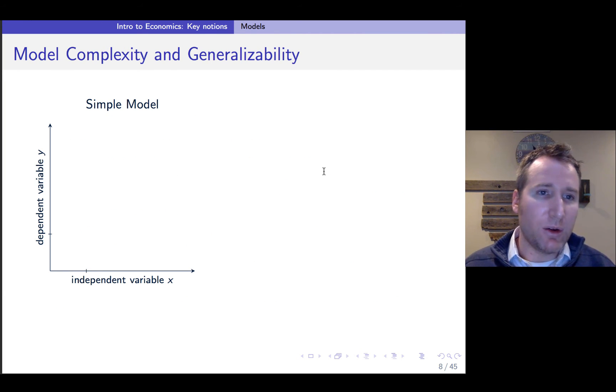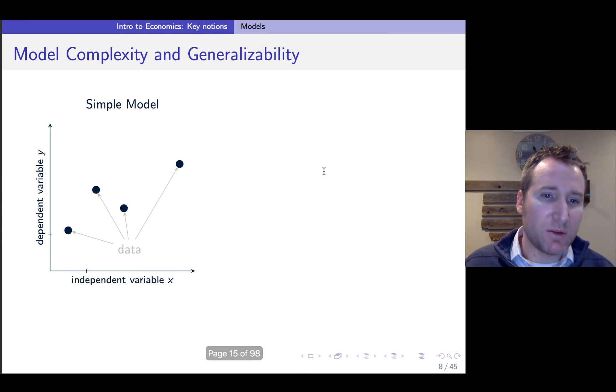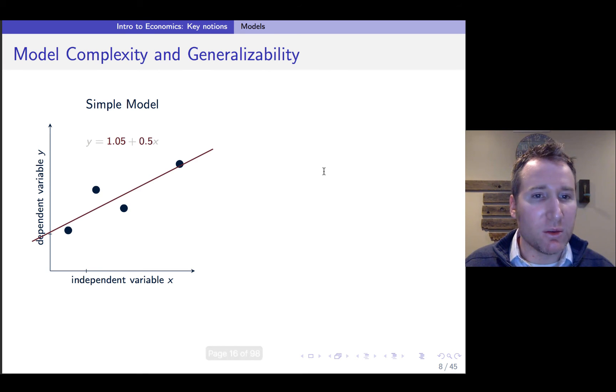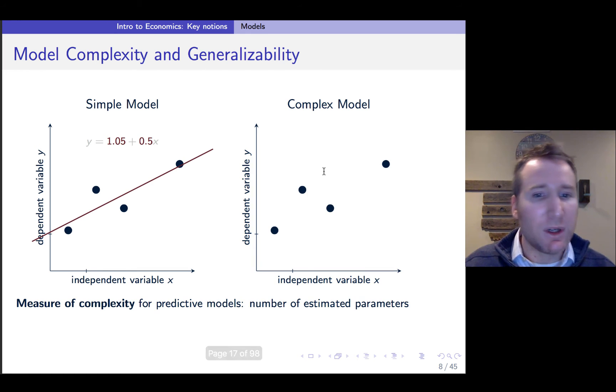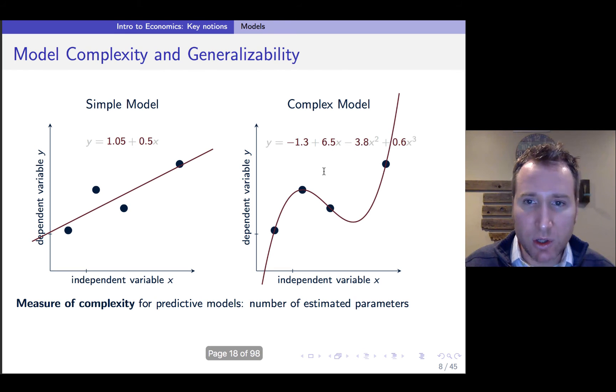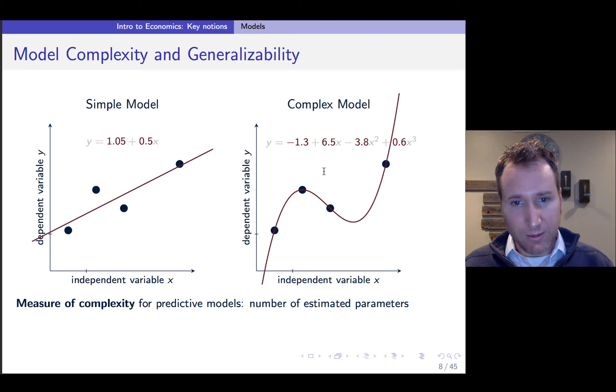So a note on model complexity. Let's say you're trying to compare the relationship between some variable X and a dependent variable Y. You've observed some data points for different values of X and Y. A simple model might just be a linear one, so you find the best fit line. But if you do that, there's going to be some measurement error because you don't perfectly fit the points. So you could make your model more complex. So say instead of doing a linear model, do a cubic one. And you can completely eliminate error on the data that you have. But this makes that model more complex and potentially less accurate and robust for making predictions.